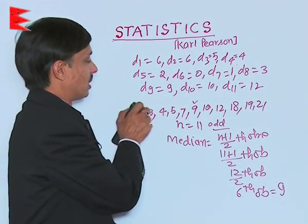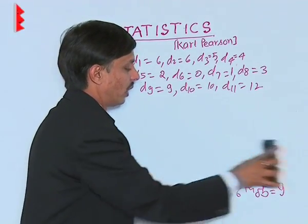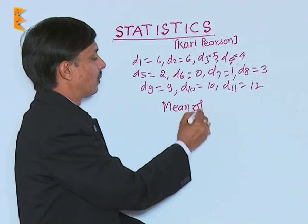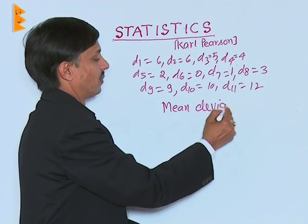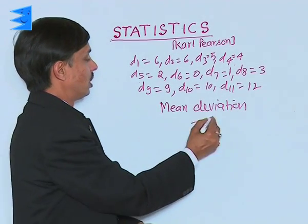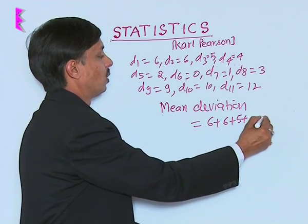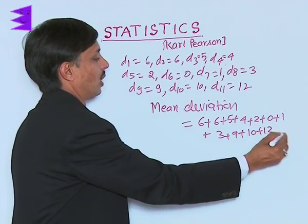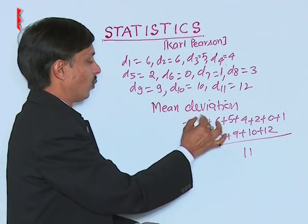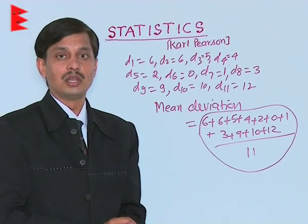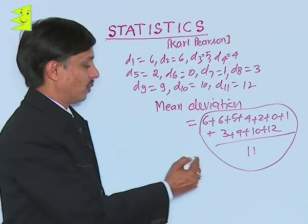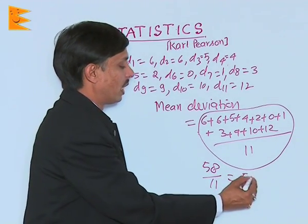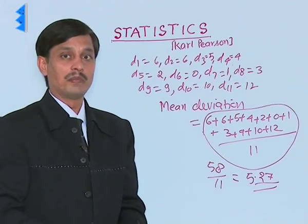The mean deviation is the mean of all the deviations. The sum of deviations is 6+6+6+5+4+2+0+1+3+9+10+12 = 58, divided by 11. So 58/11 = 5.27, which is the mean deviation about the median for this problem.